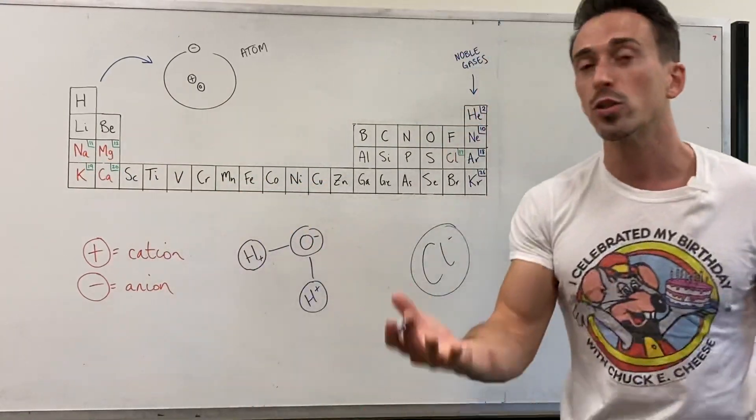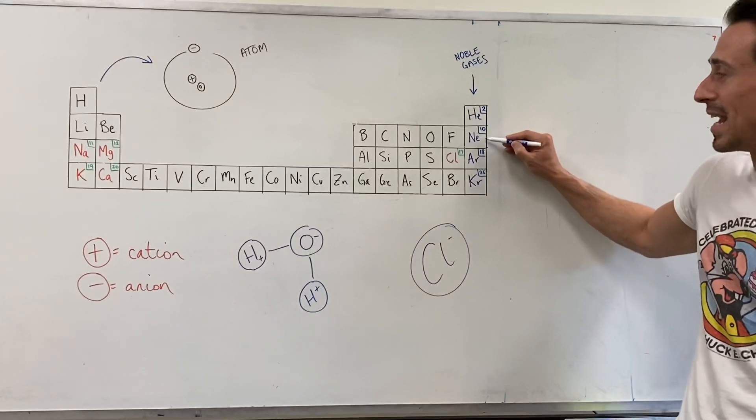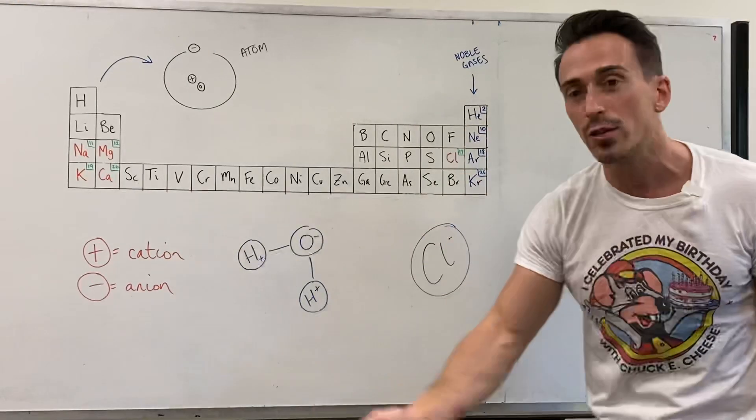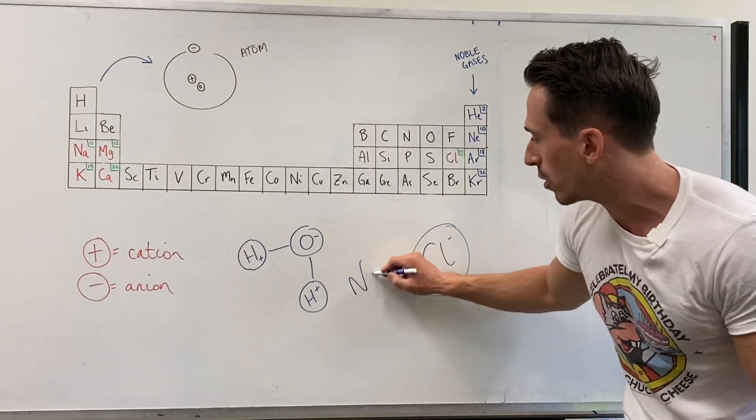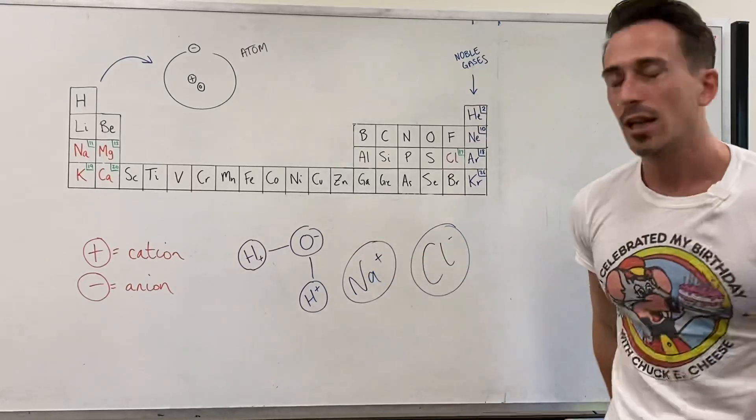Sodium 11, 11 electrons, wants to be like its closest noble gas, neon, which is 10. So it needs to lose an electron. The only way sodium will be happy is if it loses that electron.